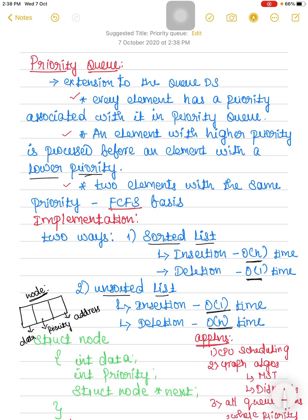Hello everyone. In this video I am going to discuss about priority queue. Priority queue is nothing but an extension to the queue data structure. The main difference between the normal queue and the priority queue is that in the priority queue each element is assigned a priority, whereas in a normal queue we won't be assigning any priority to each data element. The priority of the element alone will be used to determine the order in which the elements should be processed.